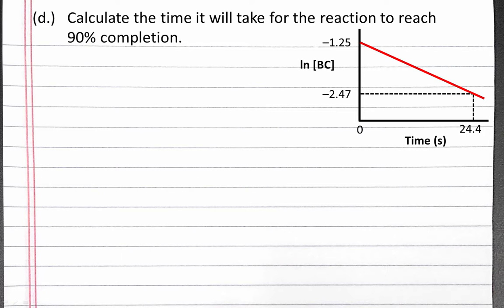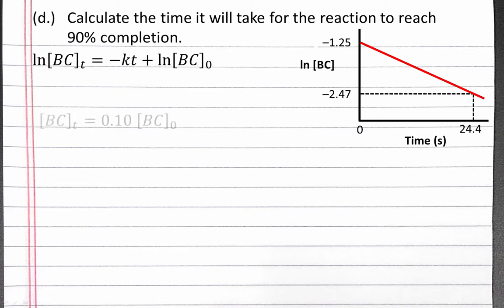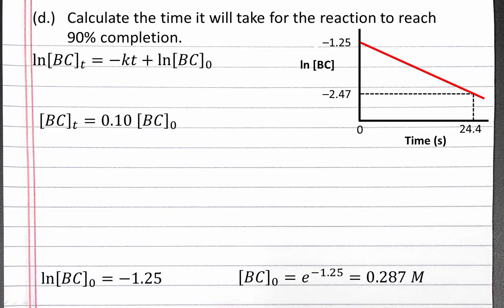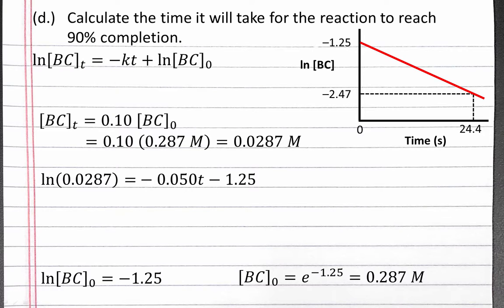Next, we'll calculate the time it takes for the reaction to reach 90% completion. We can use our integrated rate law to calculate this time. When our reaction is 90% complete, we'll have just 10% of our initial concentration of BC left over, or 0.1 times our initial concentration. To find our initial concentration, we know the natural log of the initial concentration equals our y-intercept, which is negative 1.25. So the initial concentration of BC is e to the negative 1.25, or 0.287 molar. We want to find when our concentration of BC is 10% of this, or 0.0287 molar.